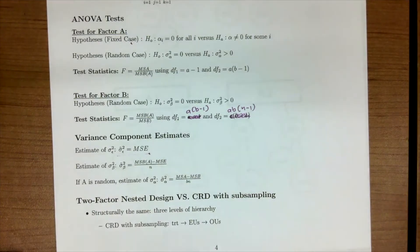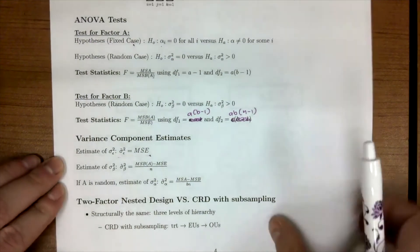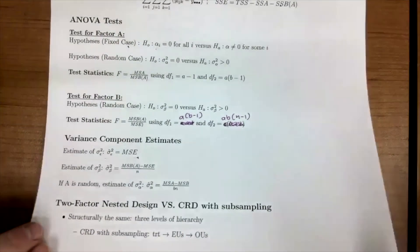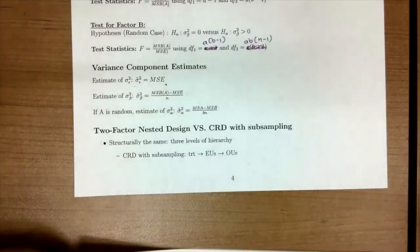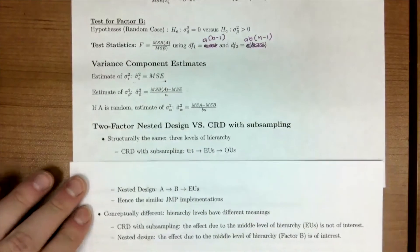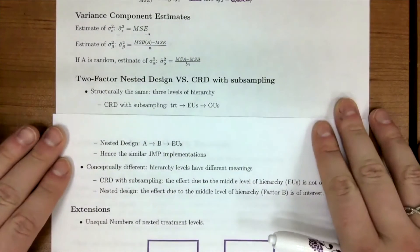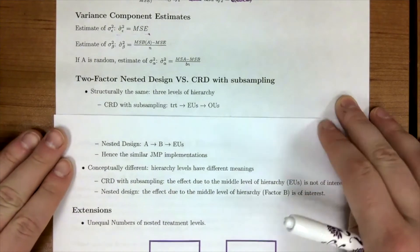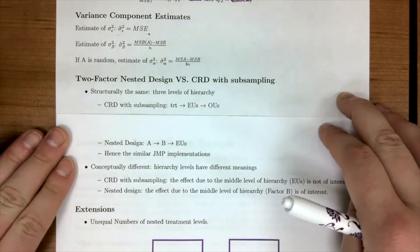Hopefully, as you guys start to look at these different designs we're doing, you'll start to recognize that some are structurally the same as others, but the interpretation and the understanding behind them are different. And in the case of the two-factor nested, structurally, it looks similar to a CRD with subsampling.